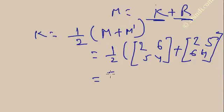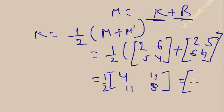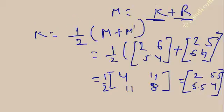Adding M and M dash: 2+2=4, 5+6=11, 6+5=11, 4+4=8. So (1/2) of [4,11; 11,8] gives K = [2, 5.5; 5.5, 4]. You can see this is a symmetric matrix: the leading diagonal elements are there, and the off-diagonal elements 5.5 and 5.5 are mirror images — same value.